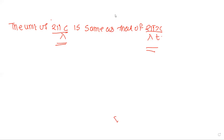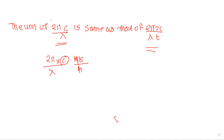Since c = x/t, we can write 2π/λ × c as meter per second divided by meter, giving per second. Substituting c = x/t, this expression turns into 2πx/(λt), which means both quantities have the same units.